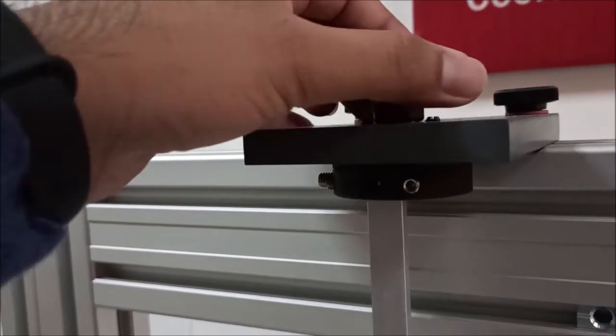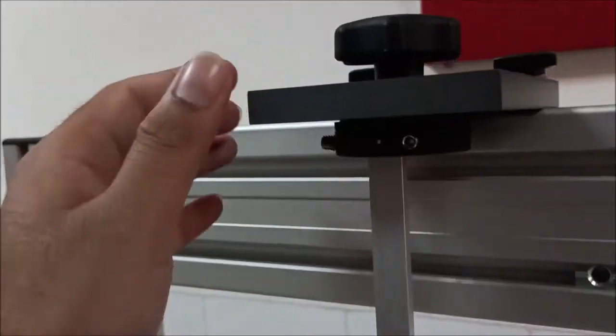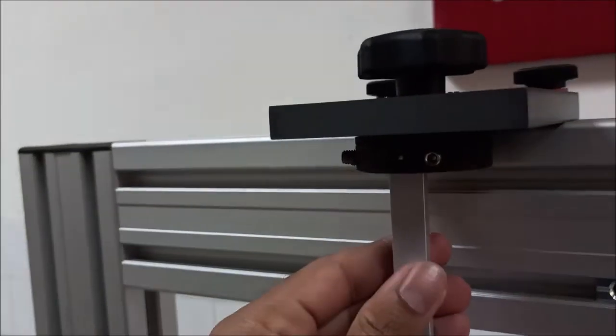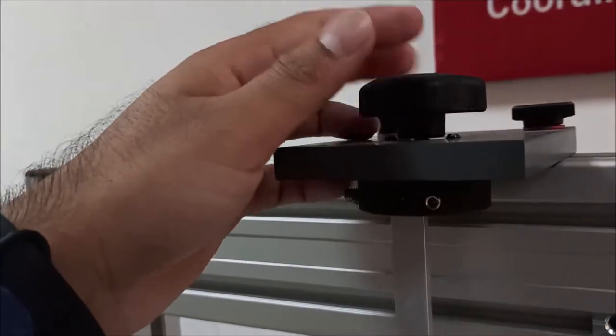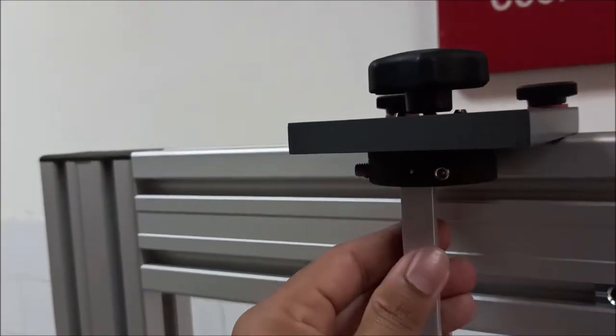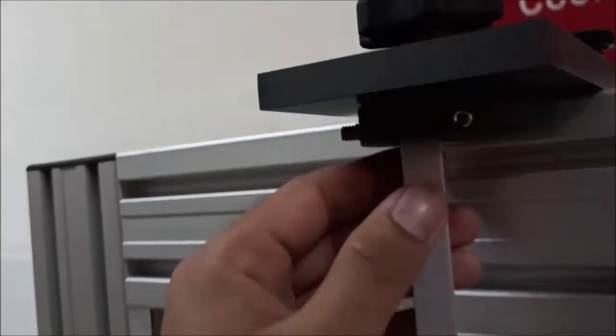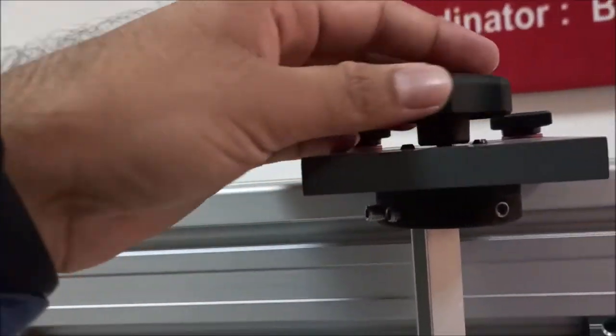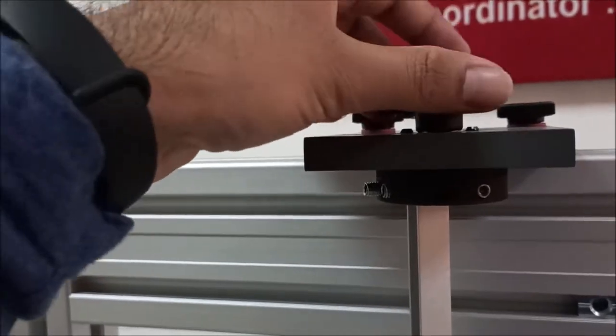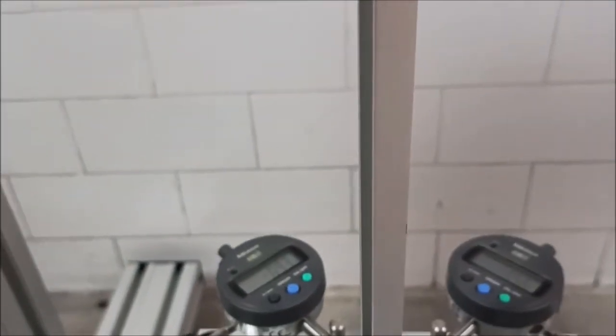For 45 degrees, we need to rotate it again. This is now at 22.5 degrees. Now we will rotate this. This is now 45 degrees. Again, we are going to put the load here and measure the deflection reading.